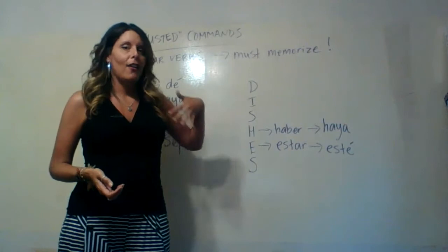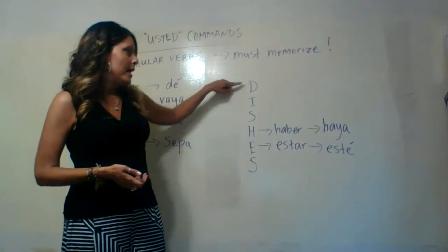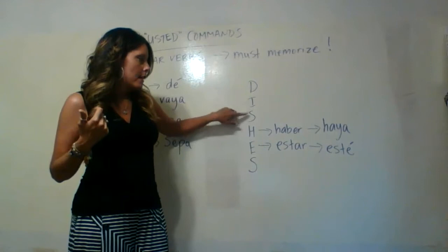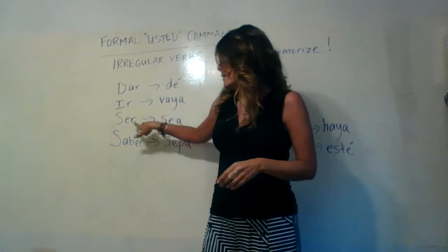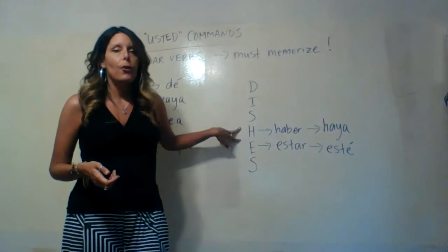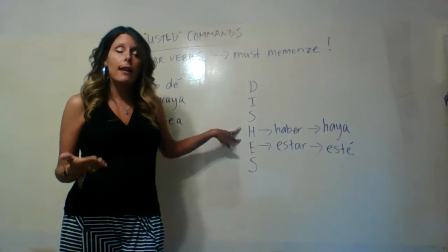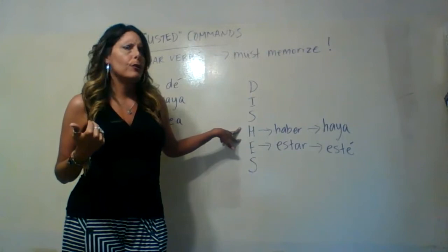If we wanted to cover all of them, it would be the acronym DISHES — D-I-S-H-E-S. The ones already discussed cover the D, I, and the two S's. There are only two other ones. Your materials don't focus on these two verbs as formal usted commands very often, and they're honestly not as common as the other four. But I wanted you to have access to them in case they come up.